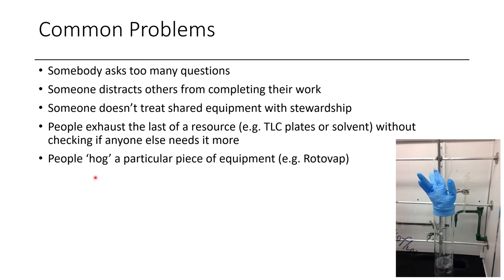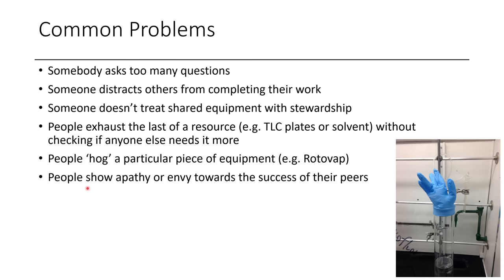Another thing that happens is people hog a particular piece of equipment, such as a rotovap or a spot on the Hivac. This is particularly a problem when access to facilities is scarce and there's only so many people who can use it at a given time. People also show apathy or envy toward peers when they have success, which can be really toxic for a healthy lab environment.